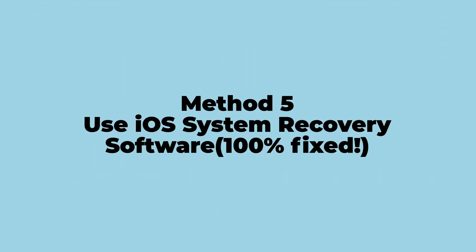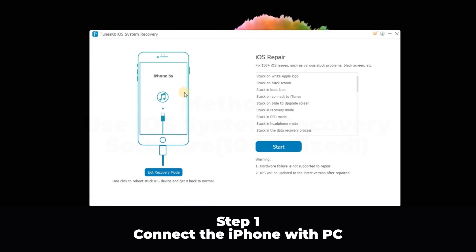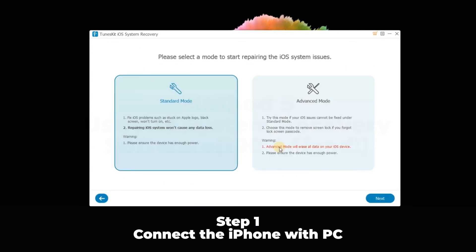Method 5: Use iOS system recovery software — 100% fixed. Step 1: Connect the iPhone with PC. Connect the iPhone with the TunesKit iOS system recovery and click the Start button. Then choose the Standard Mode option to fix it without data loss, and click Next.